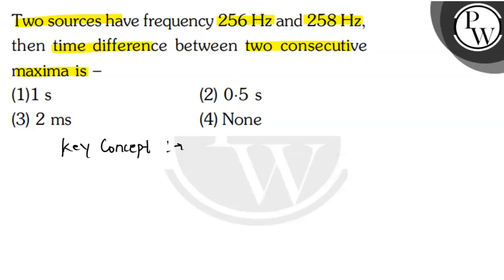Time for consecutive maxima will be 1 upon reciprocal of frequency. Here we have two frequencies, so we will use the difference n2 minus n1. We will calculate this. This is the key concept.